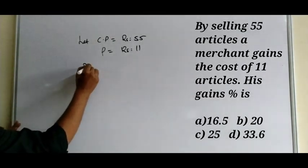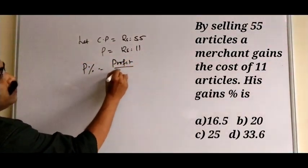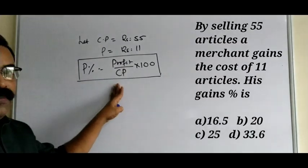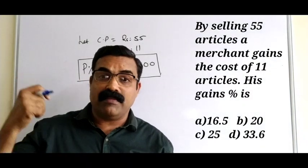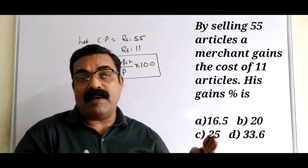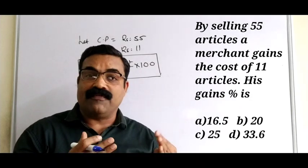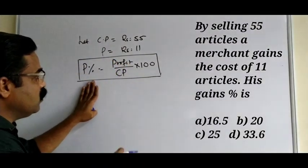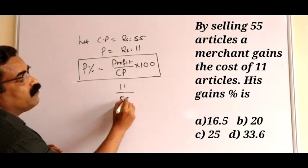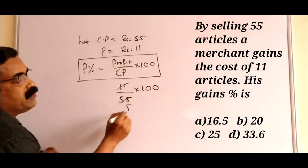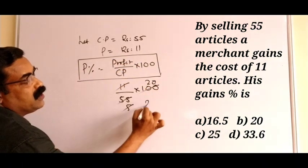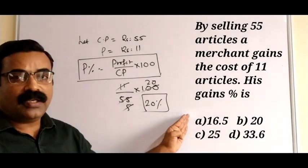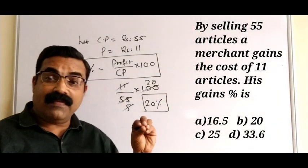We need to find out the profit percentage. The formula is: profit percentage equals profit divided by CP, multiplied by 100. This formula is very important and will not change — questions will change but the formula remains the same. So profit percentage equals 11 divided by 55, multiplied by 100, which gives us 20%. That is the answer — from the given options you can find and mark the correct option.